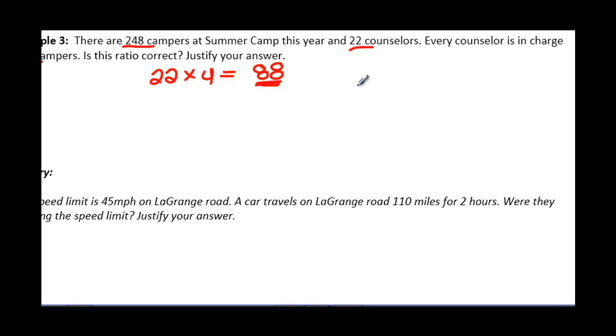To go ahead and check that, if you want, we can do 248 campers and divide that by 22. Go ahead and do that right now. When you divide 248 by 22, you get 11.27, which would mean each counselor would be in charge of between 11 and 12 kids each.